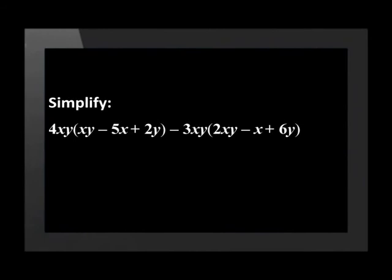Simplify the expression, 4xy, open brackets, xy, minus 5x, plus 2y, close brackets, minus 3xy, open brackets, 2xy, minus x, plus 6y, close brackets. There are two terms in the expression. Here we are required to multiply the 4xy into the first bracket and then the negative 3xy into the second bracket.